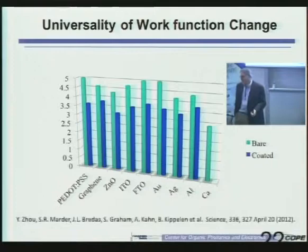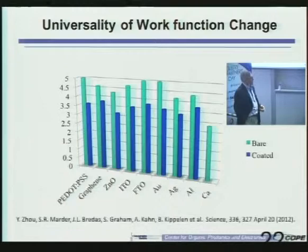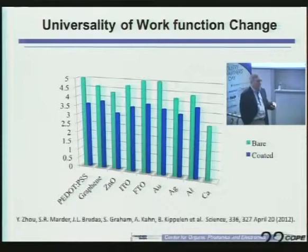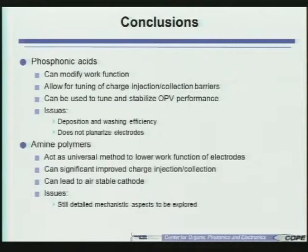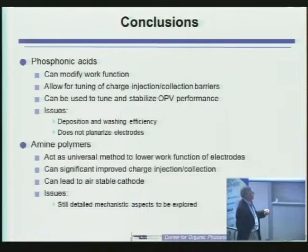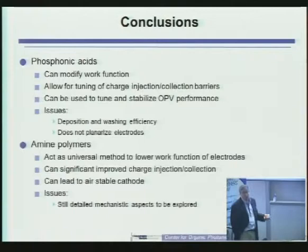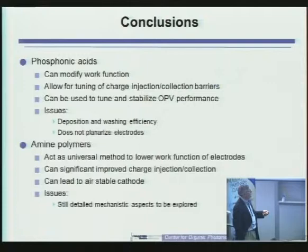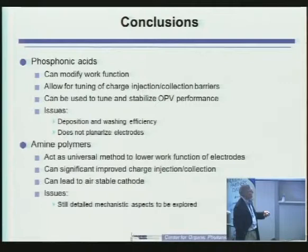We see this as a very valuable way of changing the work function, and there are still scientific questions to understand all the factors that lead to that — work that's ongoing within the center. In summary: phosphonic acids allow modification of surfaces; we're still working on optimizing deposition and washing efficiency; unlike polymers they don't planarize surfaces, so there may be advantages to polymers for certain things. The amine materials seem to act as a universal method to lower the work function — enabling improved charge injection and collection, air-stable cathodes, and eliminating the need for reactive metals.